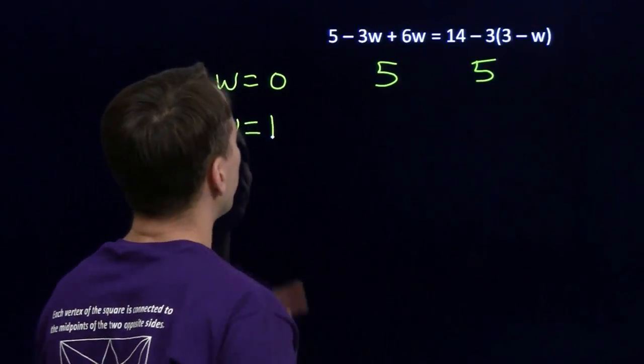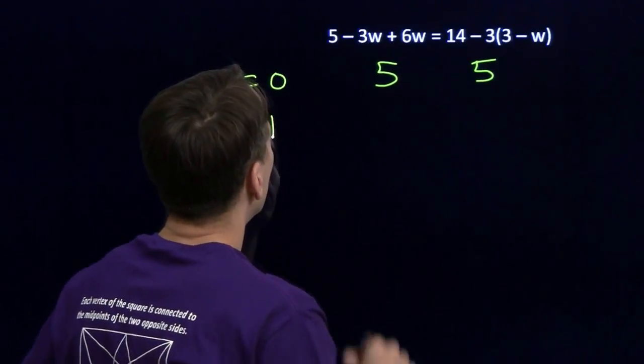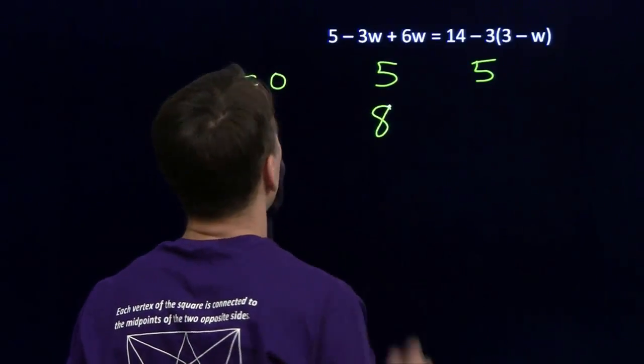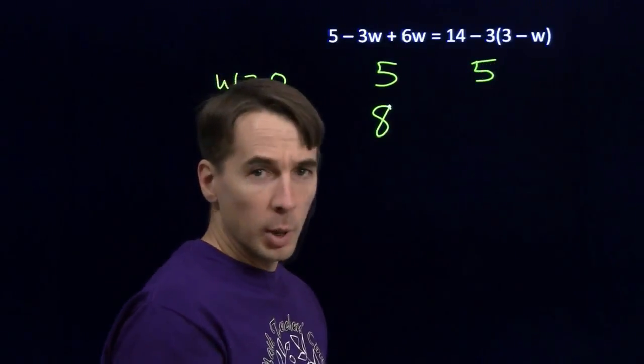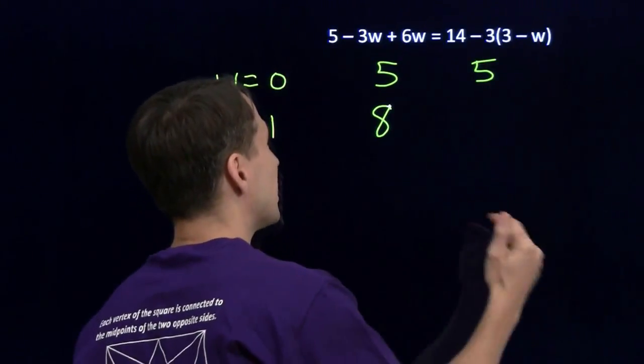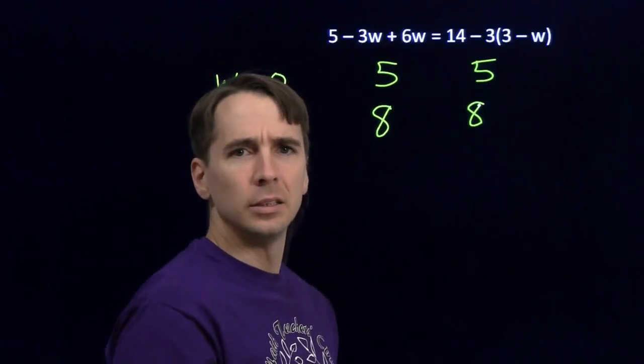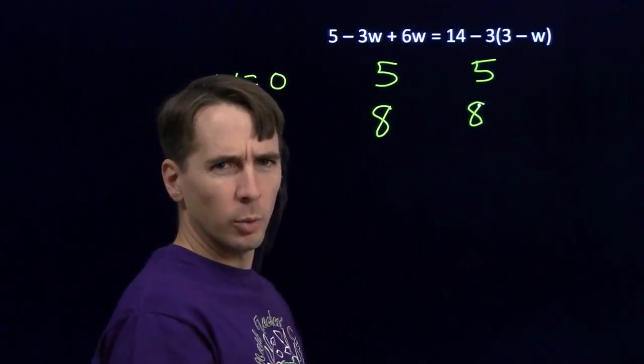Let's try another one just in case. If I put in 1, I get 5 minus 3, that's 2, plus 6 is 8. If I put 1 in over here, 3 minus 1 is 2, 2 times the 3 is 6. I subtract 6 from 14, I get 8. W equals 1 works too.